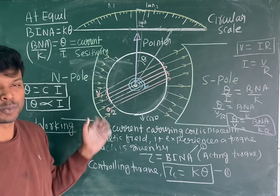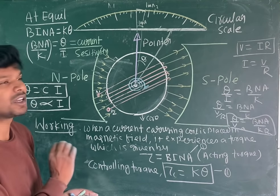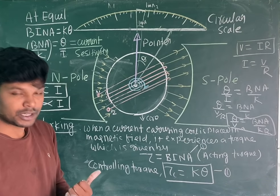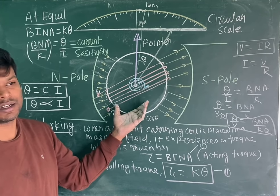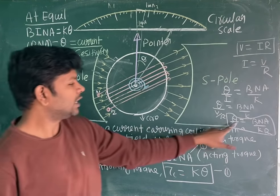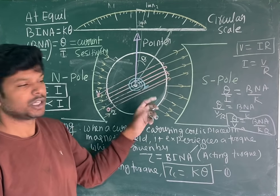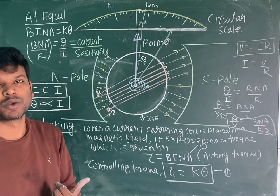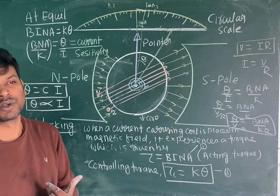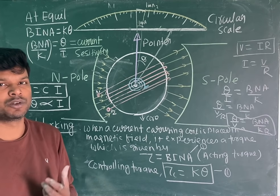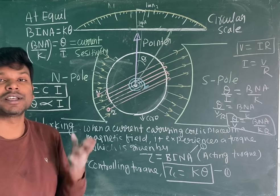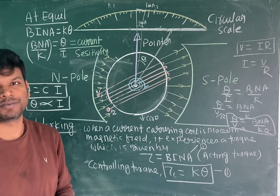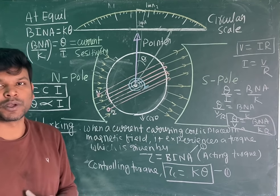In the next video we will study the conversion of moving coil galvanometer into voltmeter and ammeter. The limitation of MCG is that it cannot measure high values of current or potential difference, because the resistance of the coil is very low. If a high value of current flows, the coil will burn due to the heating effect. So the moving coil galvanometer only measures very small values of current and its direction — it is a highly sensitive device.